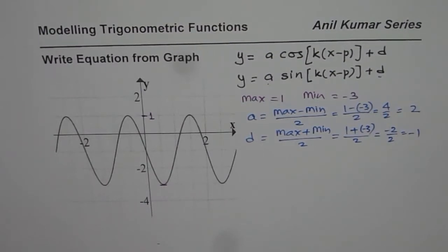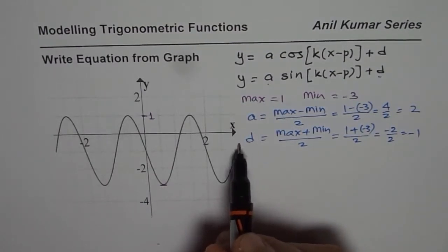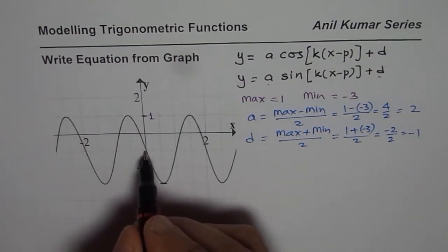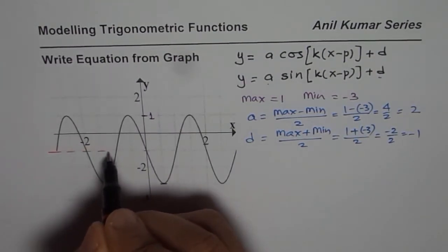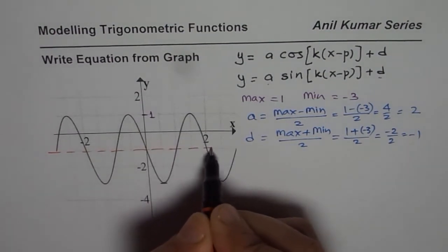Now as soon as you get the axis, it is a good idea to sketch the axis, which in our case is at minus 1. So that is the axis for us in the given graph.